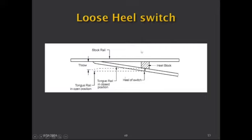The loose heel switch has been dispensed with and is no longer used. Now we have only fixed heel switches with no joint. The throw, or toe opening, is the distance from closed position to open position of the tongue rail at the toe. For existing tracks, a minimum of 90mm is ensured; for new works or alterations, a minimum of 115mm must be ensured.